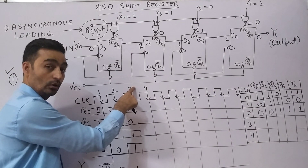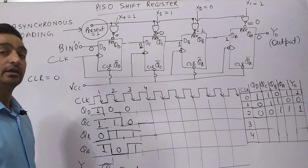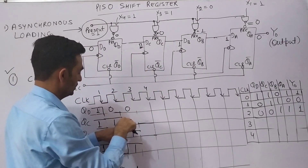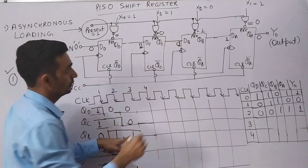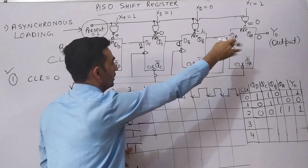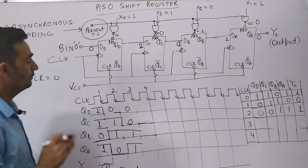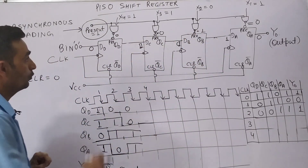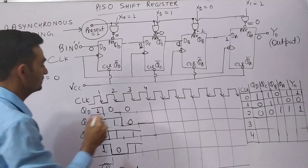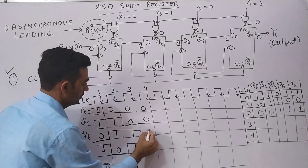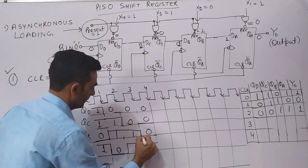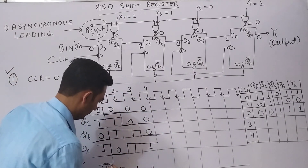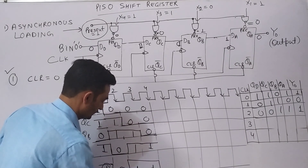Now the third clock is about to come. We need to calculate data at the input of each flip-flop. The input is 0, QD is 0, QC is 0, so the cascaded inputs are 0, 0, 0, 1. After the third falling clock edge, the outputs become 0, 0, 0, 1, and therefore the output YO will be equal to 1.